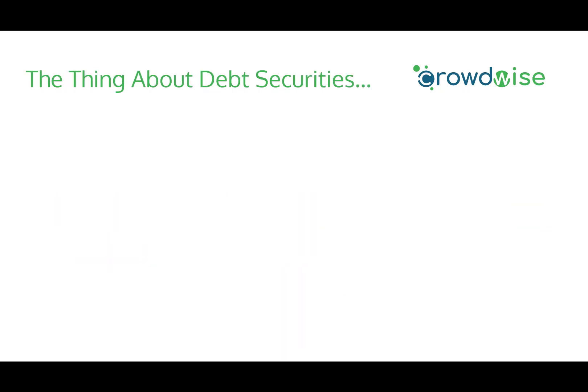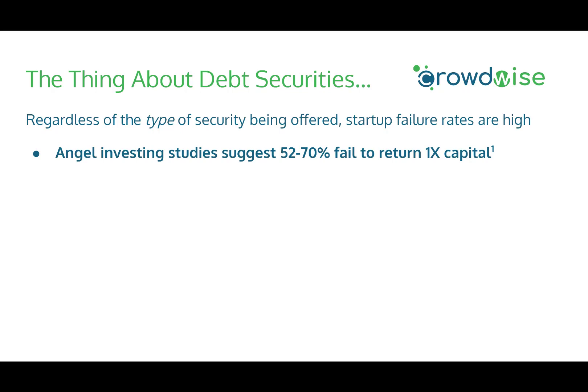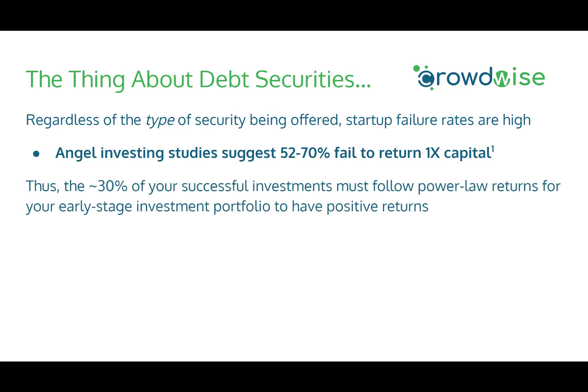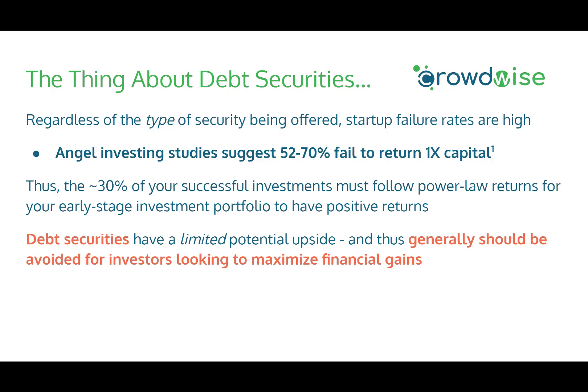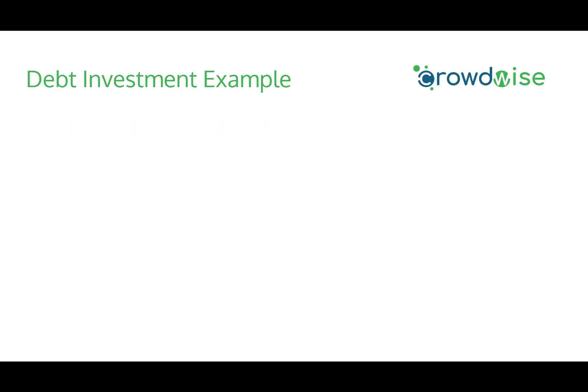Here's what all investors should know about debt securities. Regardless of the type of security being offered, startup failure rates are always going to be very high. Angel investing studies suggest anywhere from 52 to 70 percent of startups fail to return 1x the capital. Because of this, debt securities, which have a limited potential upside, should generally be avoided for investors looking to maximize financial gains. Debt securities are best suited for investors not looking to maximize financial gains, with some exceptions such as uncapped revenue share notes which don't limit the upside.